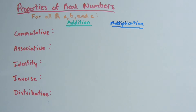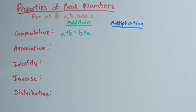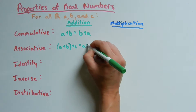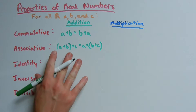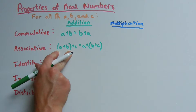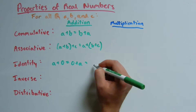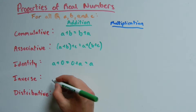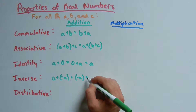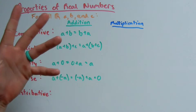Let's go over addition first. The commutative property for addition: a plus b equals b plus a. The associative property: (a plus b) plus c equals a plus (b plus c), where a and b are in parentheses on the left-hand side and b and c are in parentheses on the right-hand side. The identity property: a plus 0 equals 0 plus a, which equals a. The inverse property states that a added to the opposite of a equals 0.